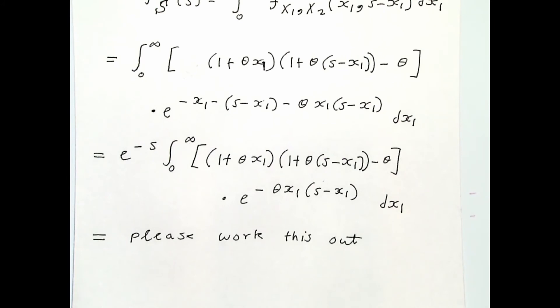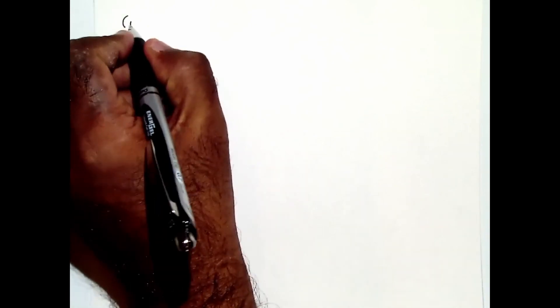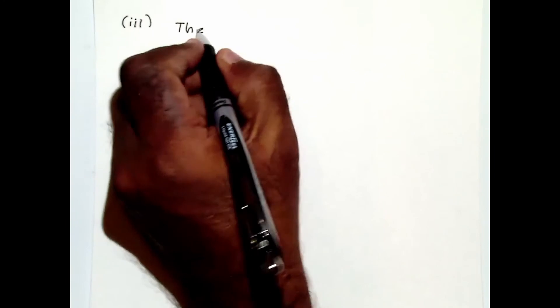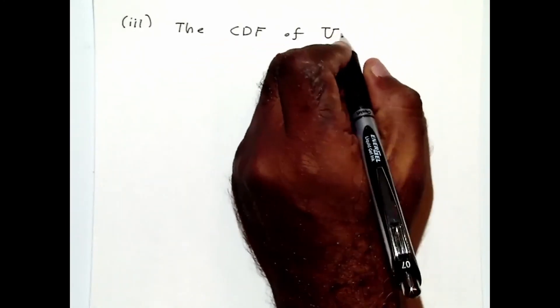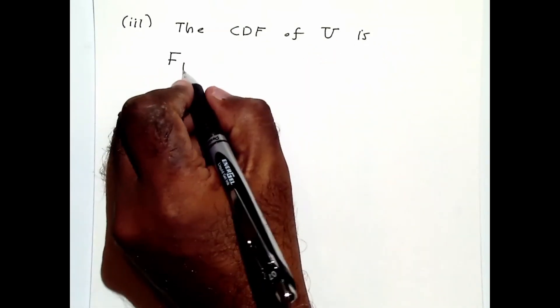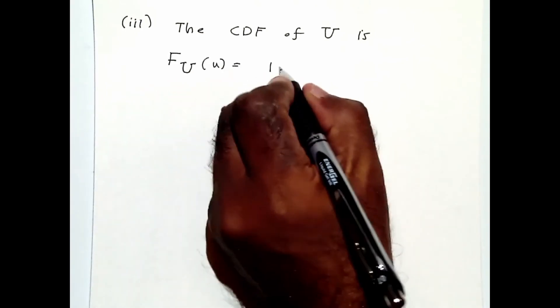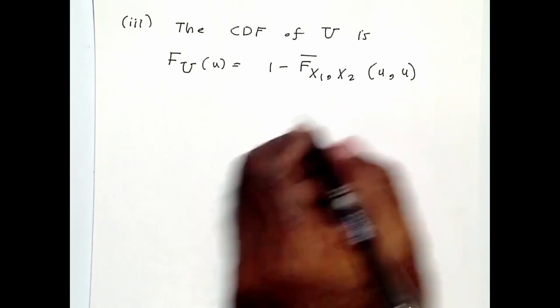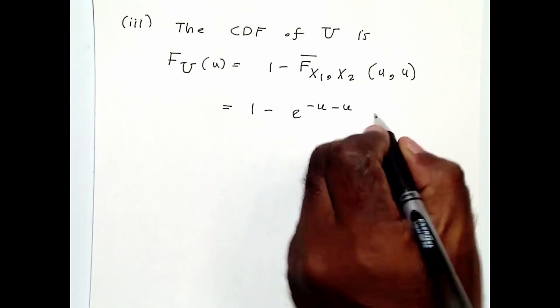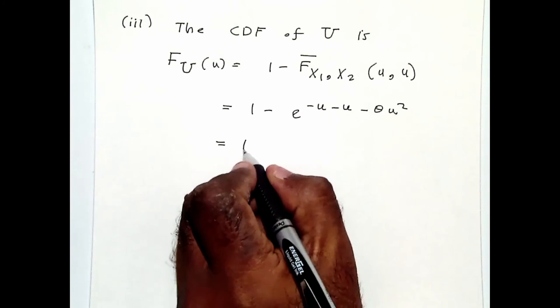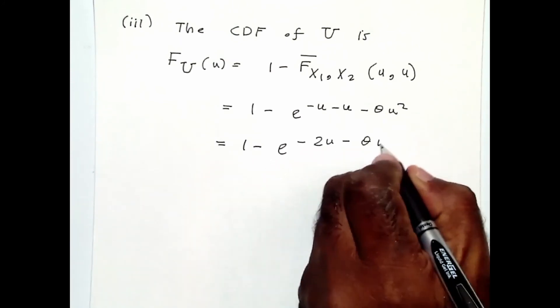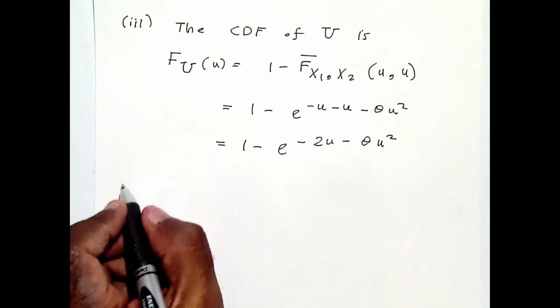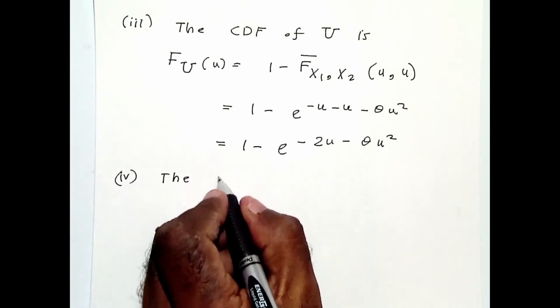For part 3, the CDF of U: using the formula from this video, the CDF of U is one minus the joint survival function at u. This equals one minus e^(minus u) times e^(minus u minus theta·u squared), which simplifies to one minus e^(minus 2u minus theta·u squared).